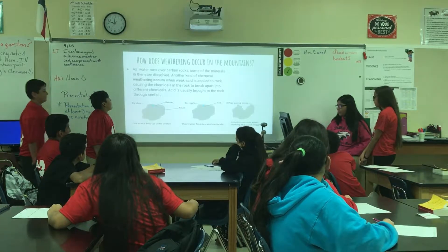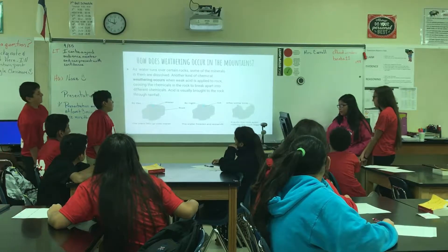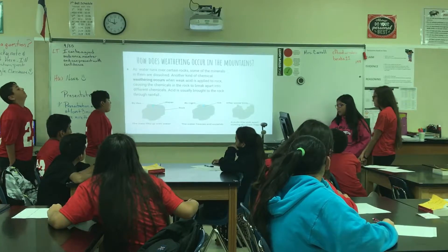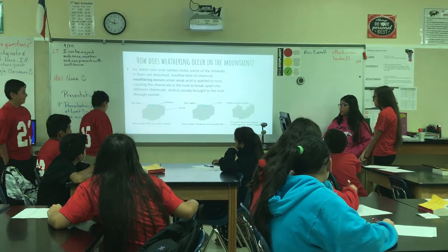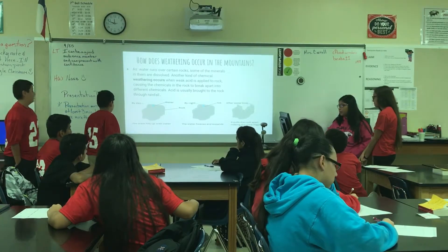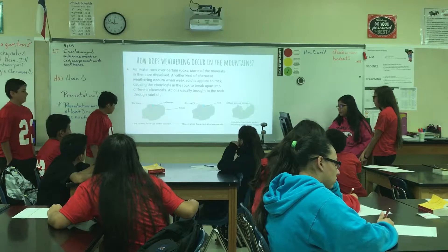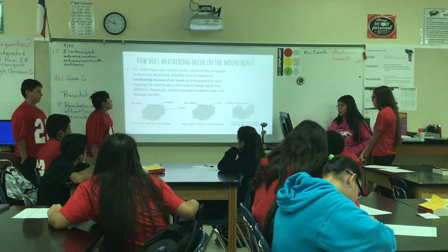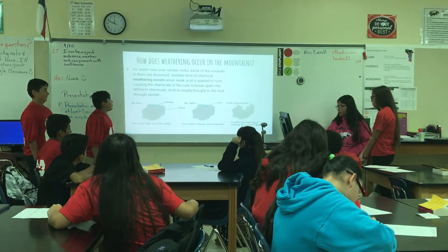How weathering appears in the mountains: as water runs over sand and rocks, some of the minerals are lost. Another kind of chemical weathering, of course, is when weak acid is applied to rock. Calcium and chemicals in the rock break apart into different chemicals. Acid is usually brought to the rock through rainfall.